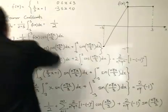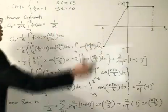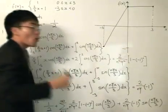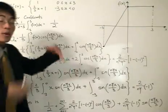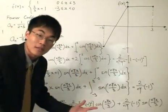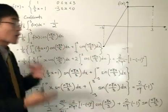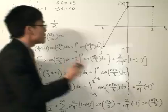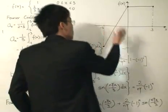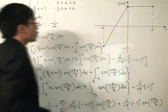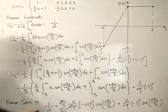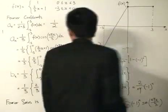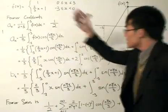Our function f(x) is given by this graph, and we want to find the Fourier series of this graph. After we find the Fourier series, we want to use the convergence test to see where the Fourier series converges to. Without further ado, we first find the Fourier series, which is what I did over here.